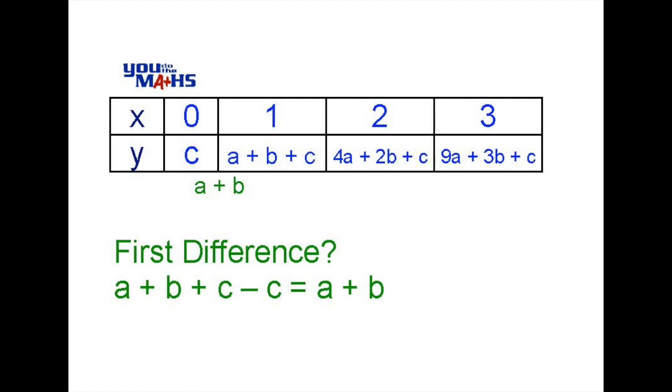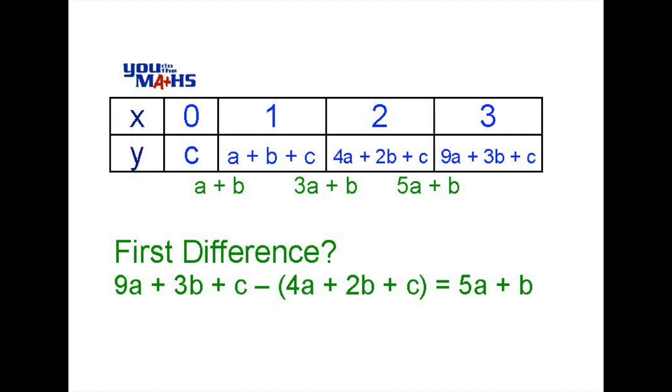Let's see what happens when we work out the next difference. We can see that 4a minus a gives 3a, 2b minus b gives b and the c's once again are eliminated. The next difference is 5a plus b because 9a minus 4a is 5a, 3b take 2b is b and once again the c's are eliminated.